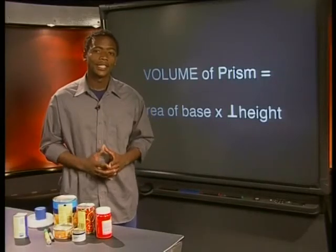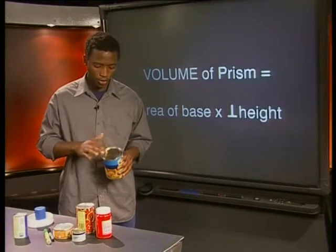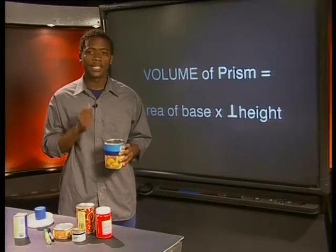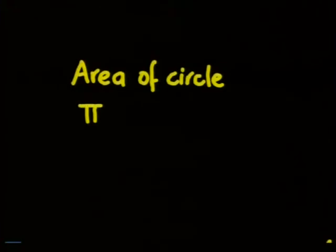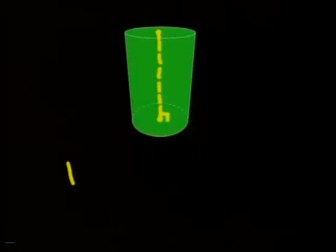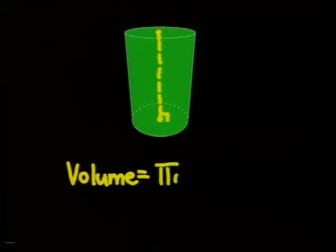One other thing which the right cylinder has in common with the right prism is the formula for determining its volume. We know that the formula for finding the volume of a right prism is area of base times perpendicular height of the prism. We also know that the shape of the base in a cylinder is a circle. So to find the volume of a right cylinder, we must multiply the area of the circle by the perpendicular height of the cylinder. Do you remember what the area formula for a circle is? It is pi times the radius squared. So the volume of the cylinder is equal to pi times the radius squared multiplied by the perpendicular height of the cylinder.